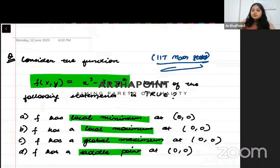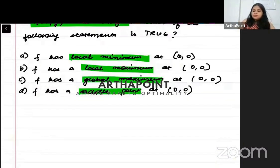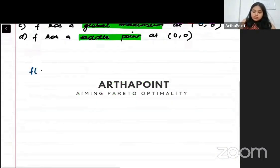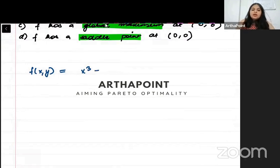Okay, let us start solving the question. So my function given to me is x cubed minus 3xy squared.